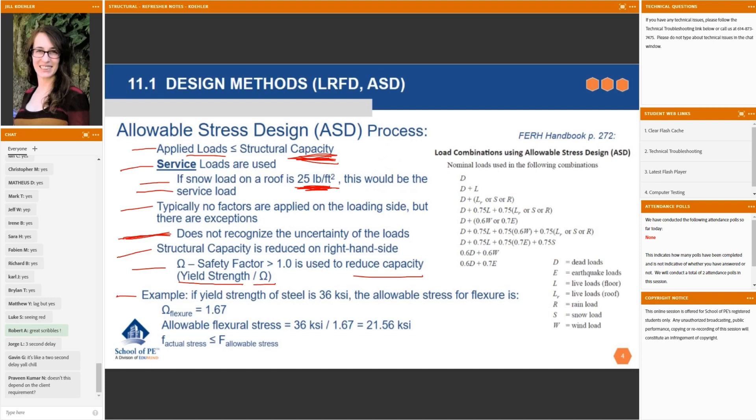So for example, if the yield strength of steel is 36 KSI, the allowable stress for flexure is what? Omega for flexure is 1.67. This would be given in a problem or in the reference handbook. So if you know that omega for flexure is 1.67 and you know that the yield strength of steel is 36 KSI, what is the allowable stress? The allowable stress for flexure is simply that divided by that. So this is our allowable stress for flexure.